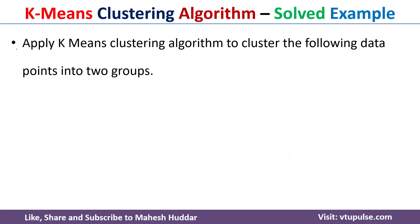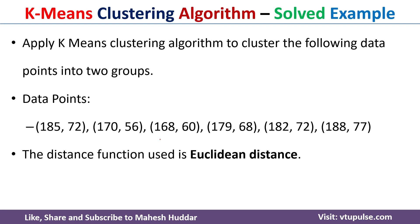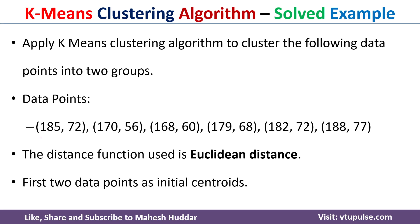In this case, we need to apply the k-means clustering algorithm and divide the given data points into two groups. We have been given six data points. To calculate the distance between the data points and the centroid, we need to use Euclidean distance. The first two data points are considered as initial centroids.